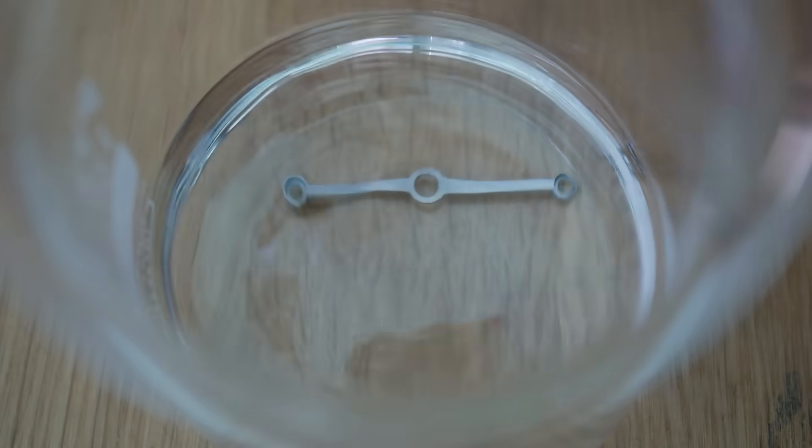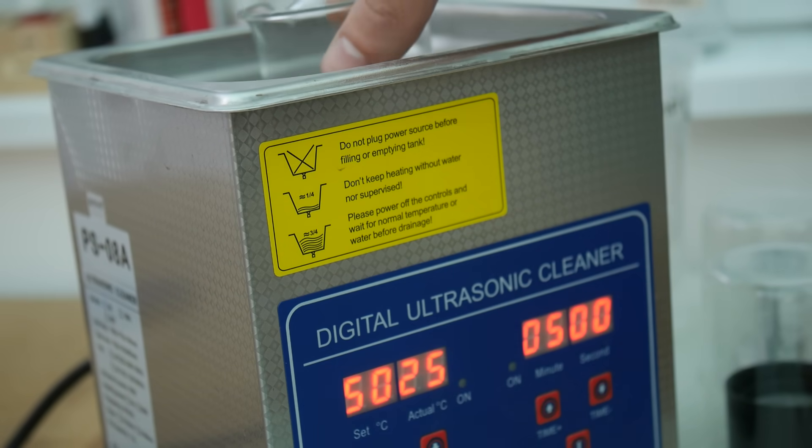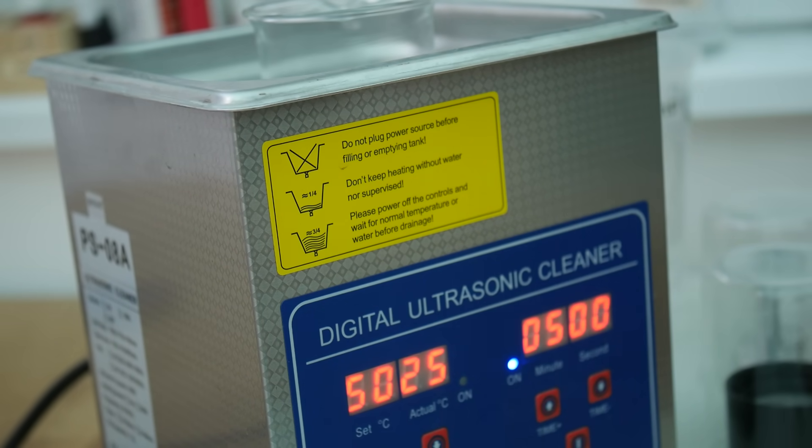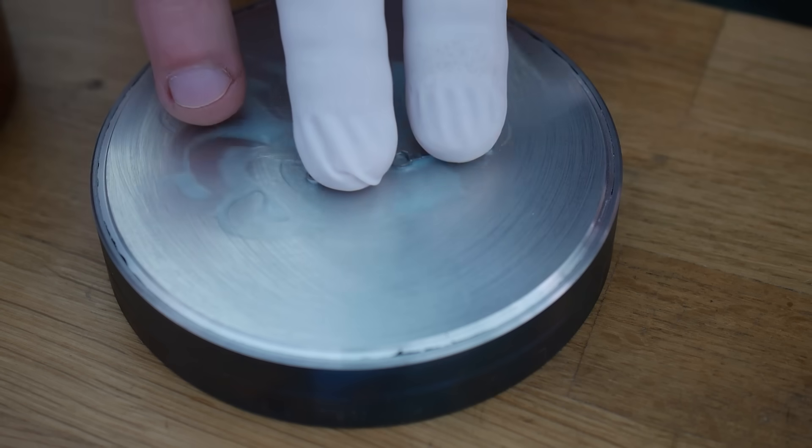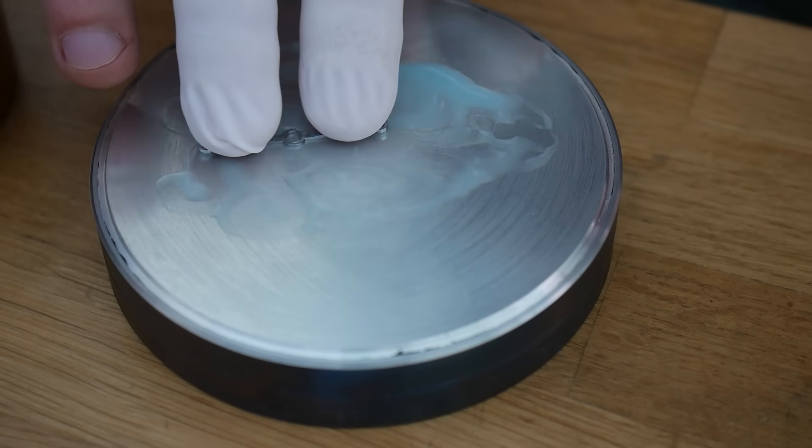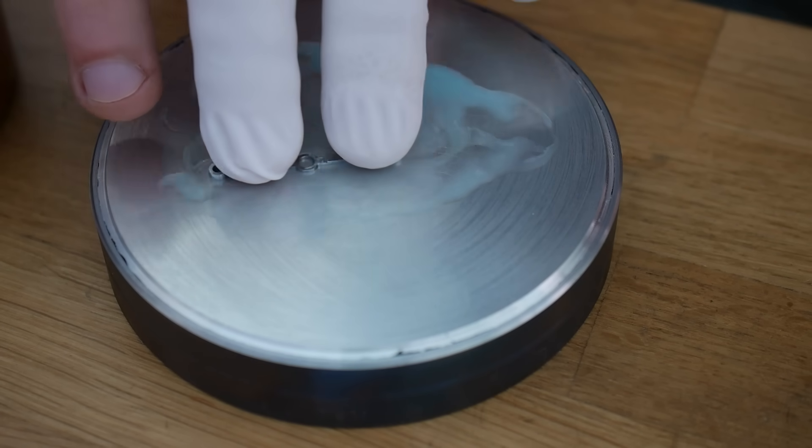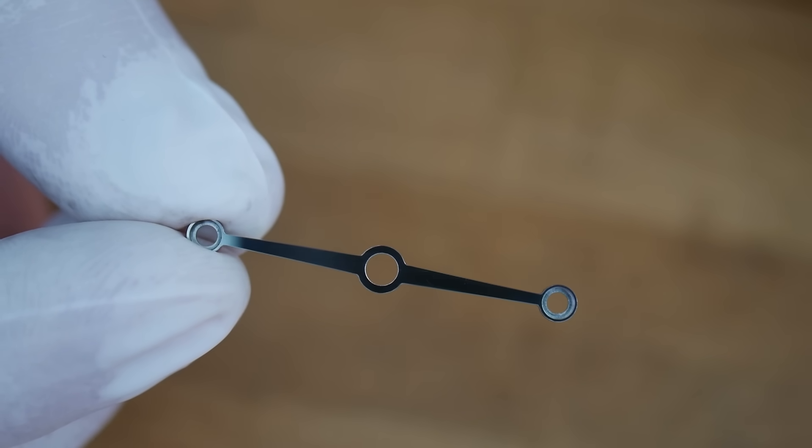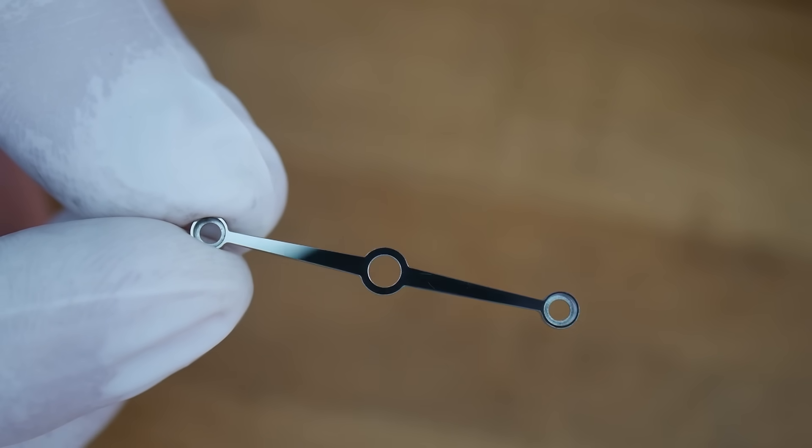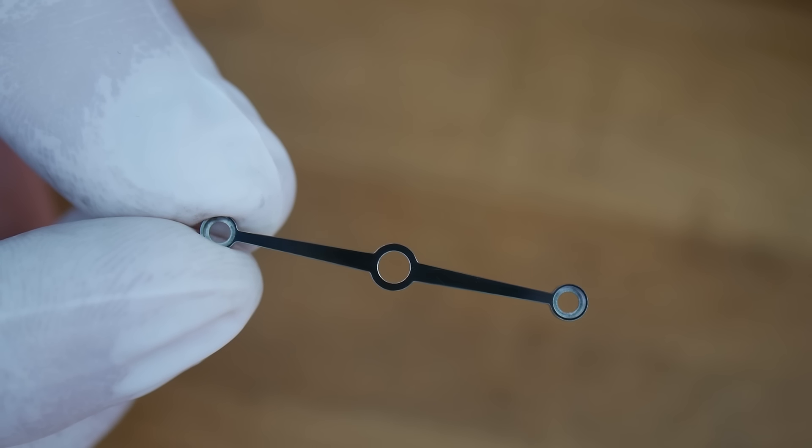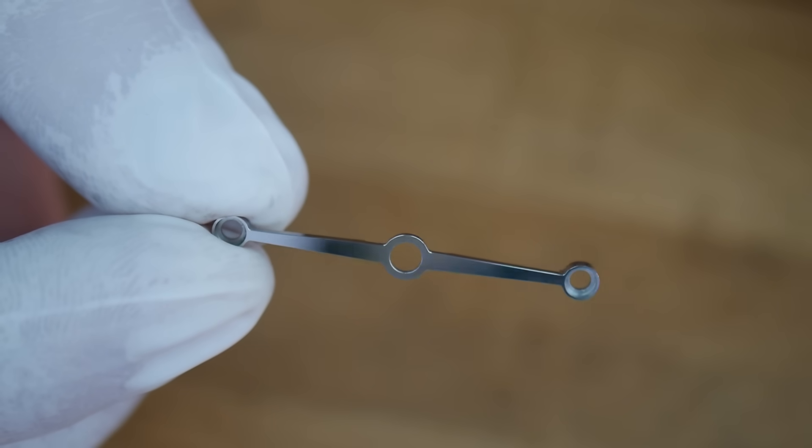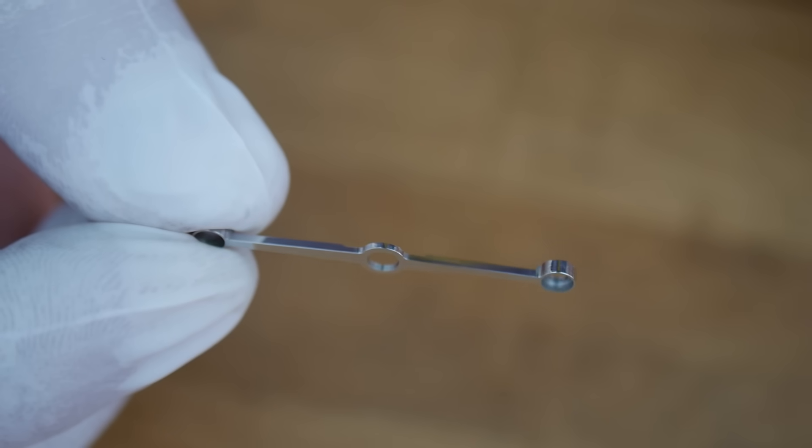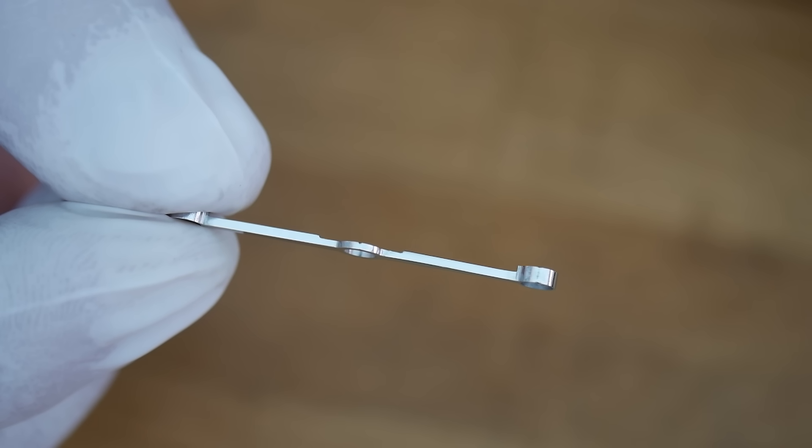Watchmakers refer to this finish as a black polish, because the surface imperfections are so small that the polished face looks either white or black depending on the direction of the reflected light. Because black polishing is so time consuming, you will not see black polished parts in mass produced watch movements, and is reserved for high end watches only. The bridge here is not perfect yet, so I clearly need some more practice with this technique.